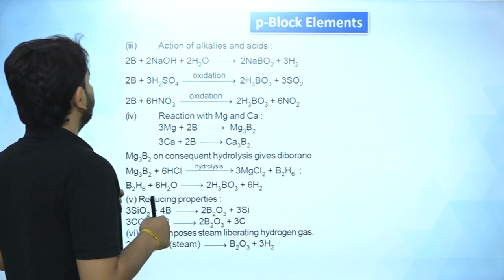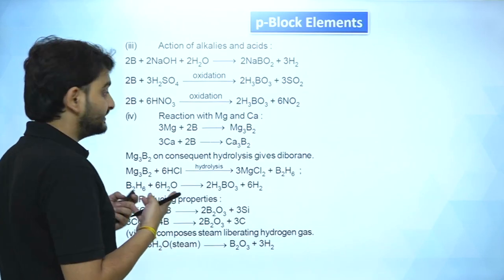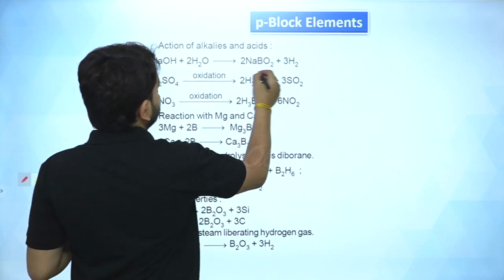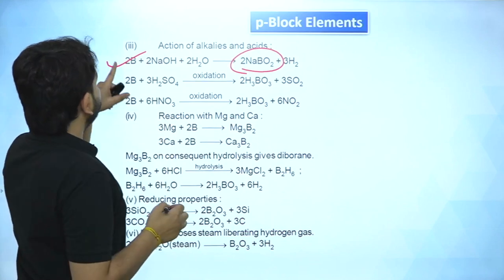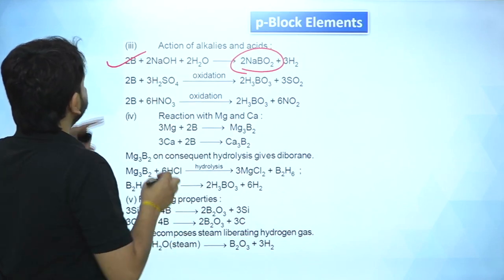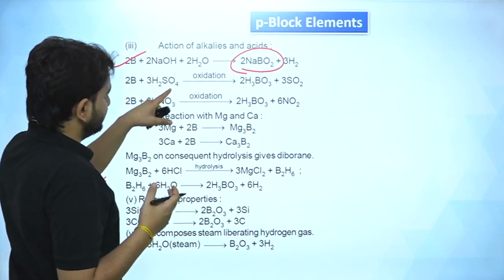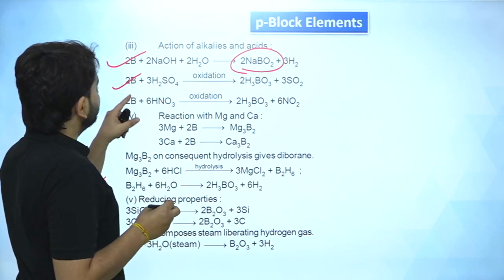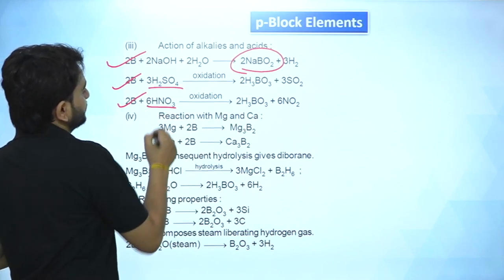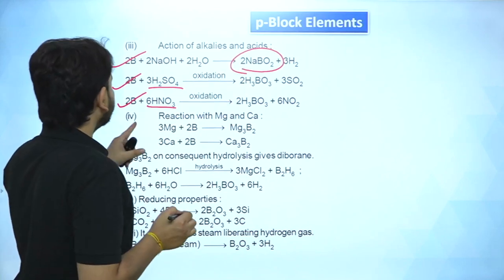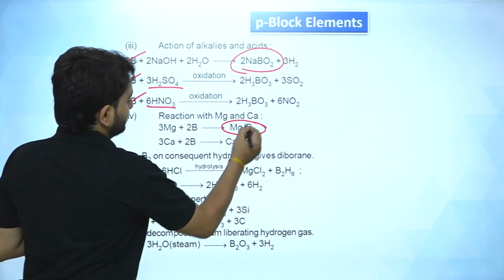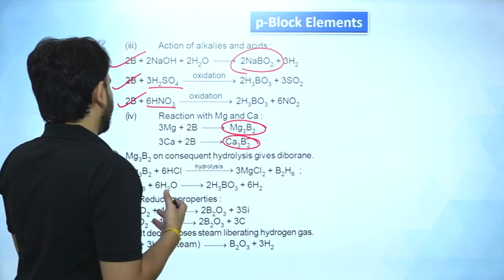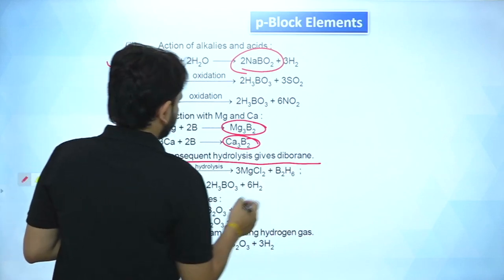Action of alkalis and acids: boron treated with NaOH in the presence of water gives NaBO₂. When boron is treated with an acid, H₃BO₃ (boric acid) is formed and SO₂ is liberated; treated with nitric acid, the acid acts as an oxidizing agent. Reaction with Mg and Ca: since boron is non-metallic, it forms covalent bonds. Mg₃B₂, on hydrolysis, gives diborane (B₂H₆) — this is one very important preparation route for diborane.